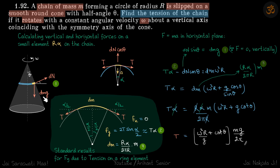In the vertical plane you have dm·g downwards and DN sin theta upwards. So our approach is to break it into horizontal forces and vertical forces and write F = ma on each of those planes.